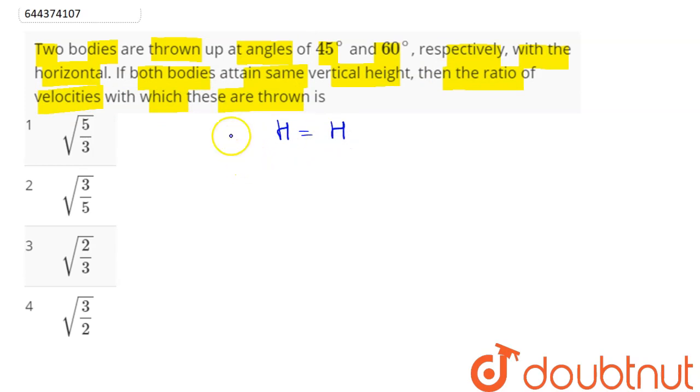And we know here that u1 squared sine squared theta divided by 2g is the maximum height.